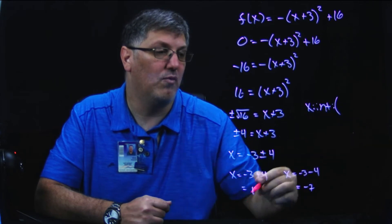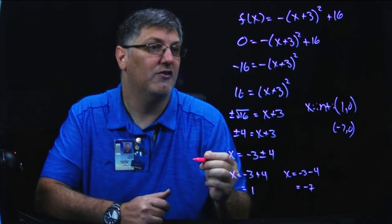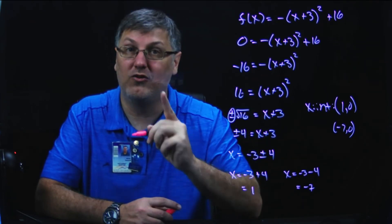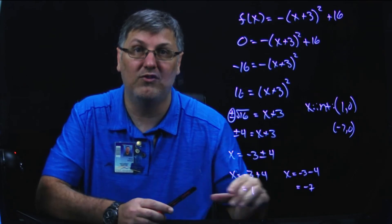So therefore, my points, my x-intercepts, which are points that I'm going to want, is going to be 1 comma 0 and negative 7 comma 0. This one, I think, is a lot easier, but the big mistake is going to be right here, that plus or minus. You have to remember to do the plus or minus whenever you take the square root.